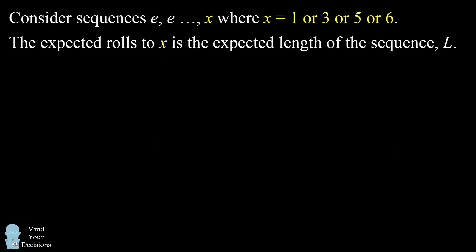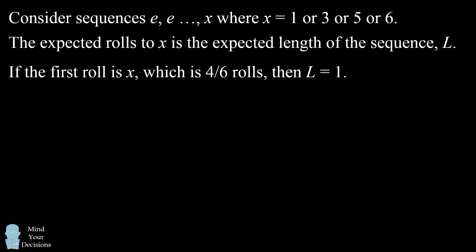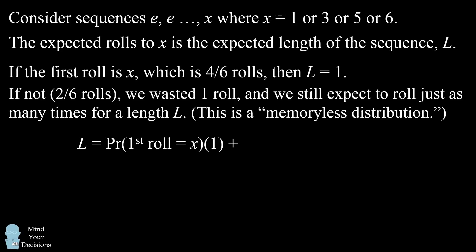We can figure this out from a logical consideration. If we roll 1, 3, 5, or 6 in the very first roll, that's 4 out of 6 possibilities. Then the length of the sequence will be 1. But if we do not roll that, that means we rolled a 2 or a 4 in the first roll. In that case, we've wasted 1 roll, and then we still expect to roll just as many times until we end in a 1, 3, 5, or 6. This is a memoryless distribution. After we have wasted the first roll, we're still going to expect a length of L to get our sequence to terminate. So this will be the second half of the expectation. So now we can substitute in the probabilities that the first roll is x. That'll be 4 out of 6 possibilities. And the probability of the first roll is not x, which will be 2 out of the 6 possibilities, which is 2 or 4.